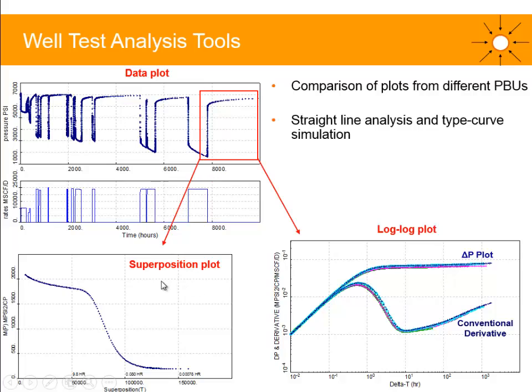Then we have a look at the superposition and the data plots as verification tools. The superposition plot is going to help you with initial pressure. And as for the data plots, you need to make sure that the PBUs are matched. If they are not, that means that your permeability or your initial pressure are not correct, or that you need to add or remove some boundaries in your model, or add or remove some changes in reservoir properties in your model as well.